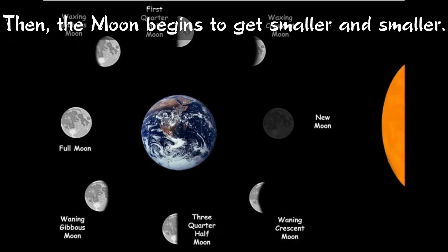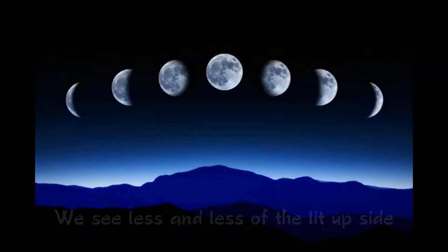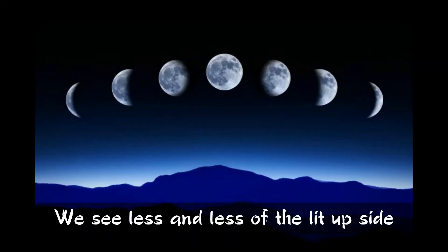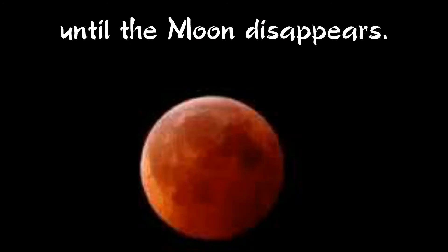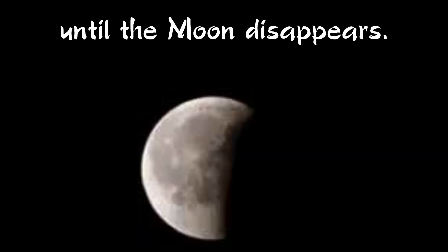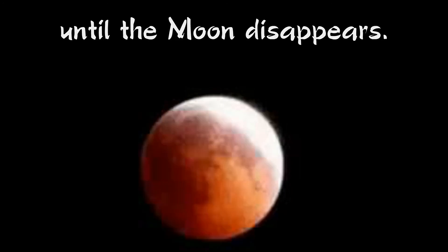Then the Moon begins to get smaller and smaller. We see less and less of the lit up side, until the Moon disappears.